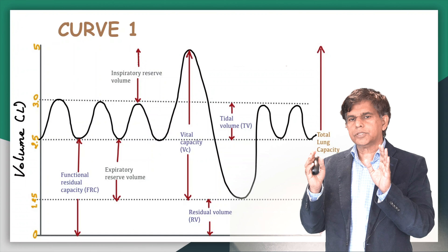Let's look at curve number one — the normal curve. It shows tidal volume, which is what we breathe in and out. Then you have vital capacity: ask the patient to take a big deep breath and blow it out. Another important term is residual volume — this is what remains in the lung even after maximum effort to blow it out.